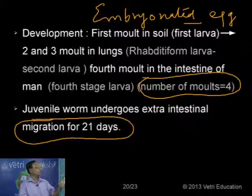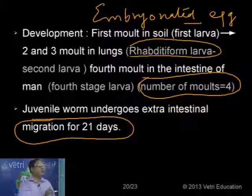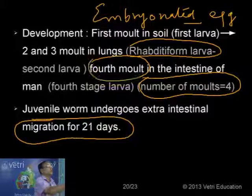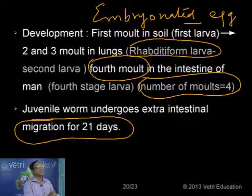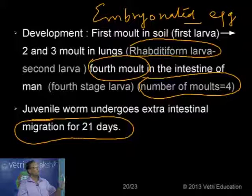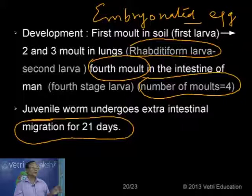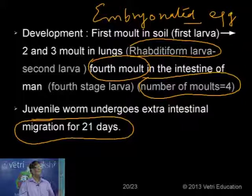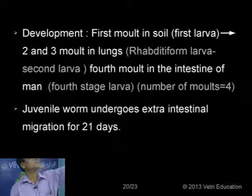The first larva is formed after the first molt in soil. The second and third molts occur in the lungs — the larva at this stage is called the rhabditiform larva. After reaching the intestine, the fourth molt is completed and it becomes the adult. So first larva in soil, second and third molts in the lungs, and fourth molt in the intestine. The total number of molts is four, and extra-intestinal migration takes 21 days.